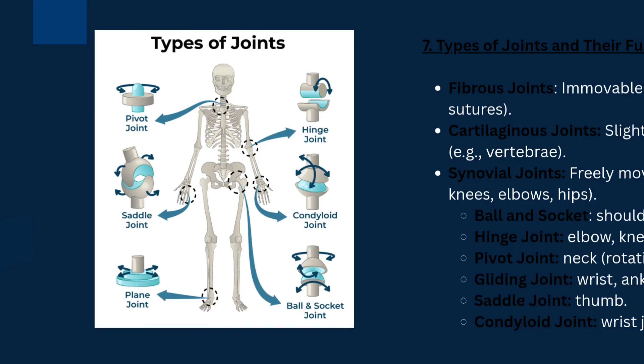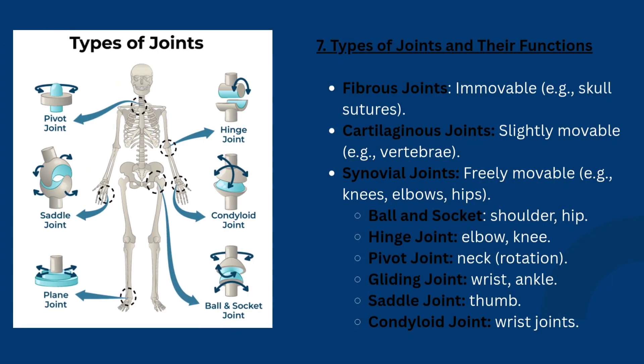Then, coming to the types of joints: fibrous joint — an immovable joint; cartilaginous joint — a slightly movable joint; and synovial joint — freely movable. Within synovial joints, subtypes include ball and socket, hinge joint, pivot joint, gliding joint, saddle joint, and condyloid joint.